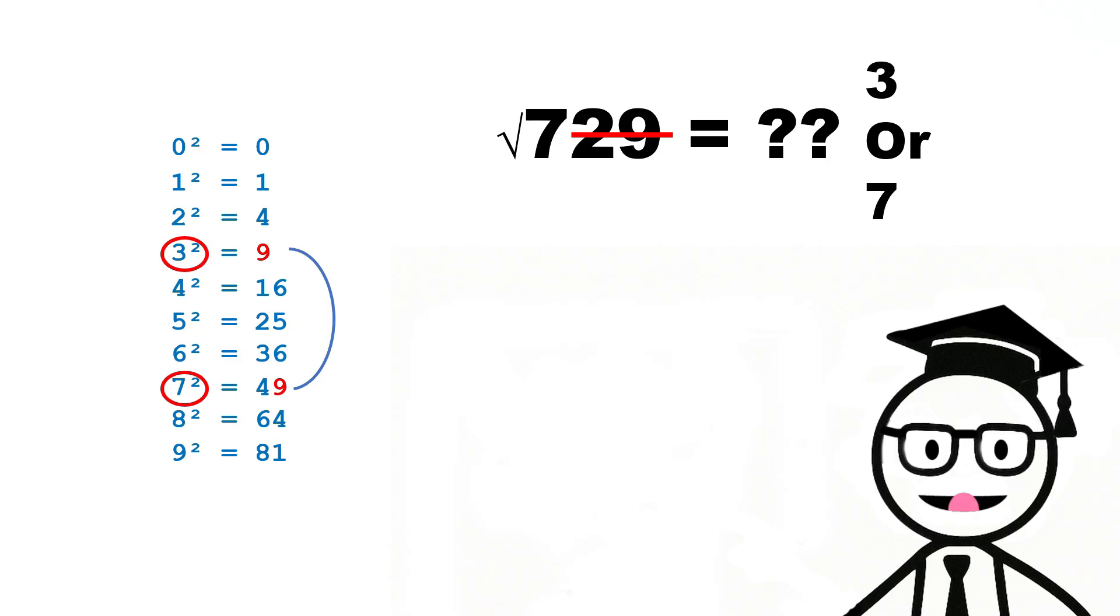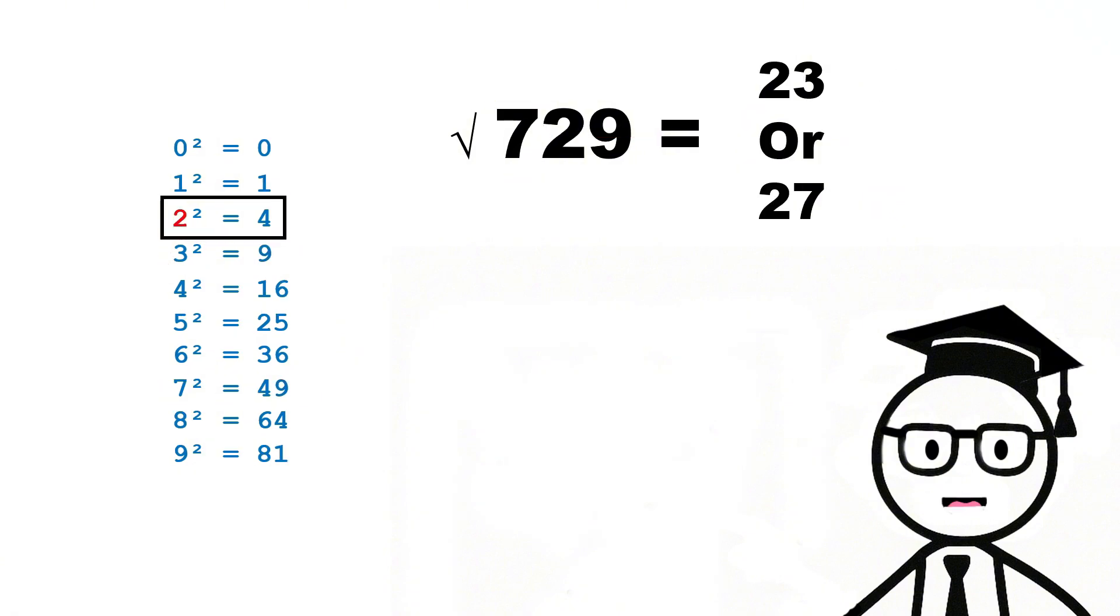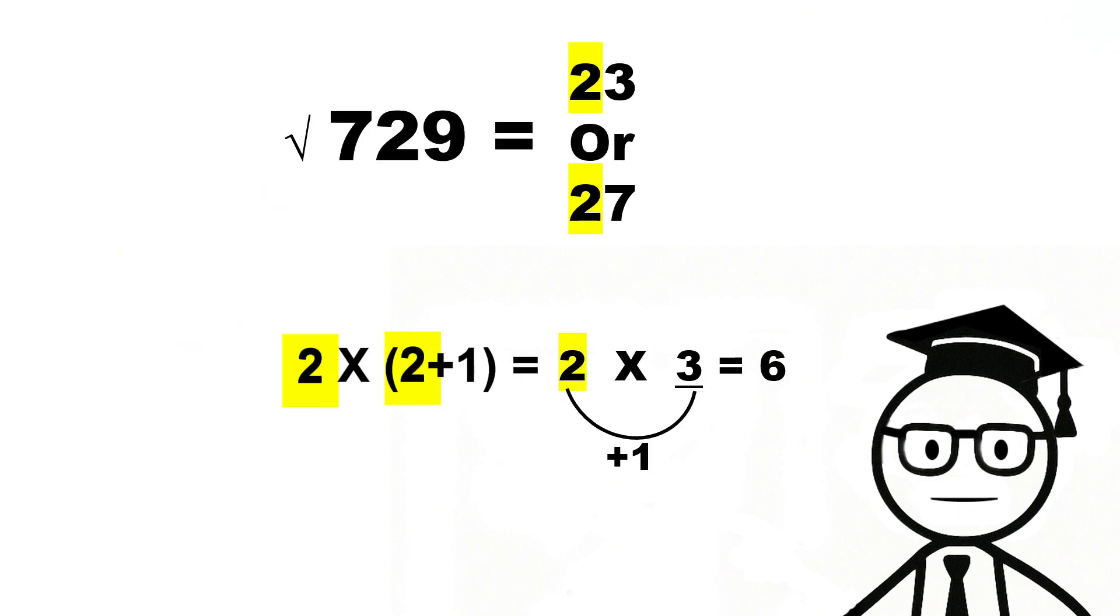What's the biggest square less than or equal to 7? That's 4, which is 2 squared. So we're looking at either 23 or 27. Here's the genius part. Multiply 2 times the next number. 2 times 3 equals 6. Now compare.